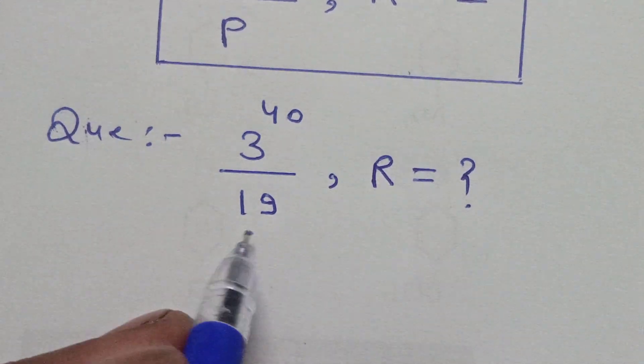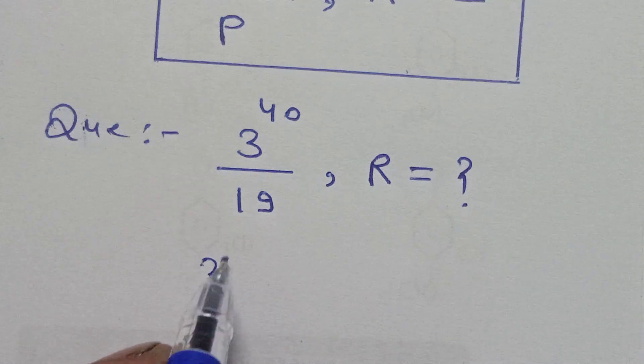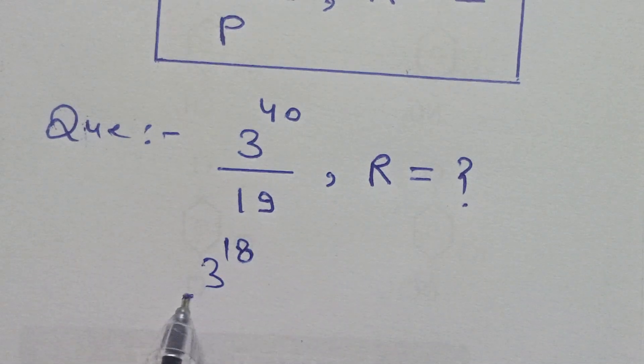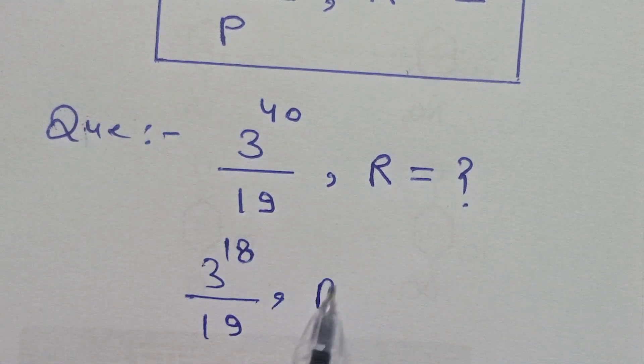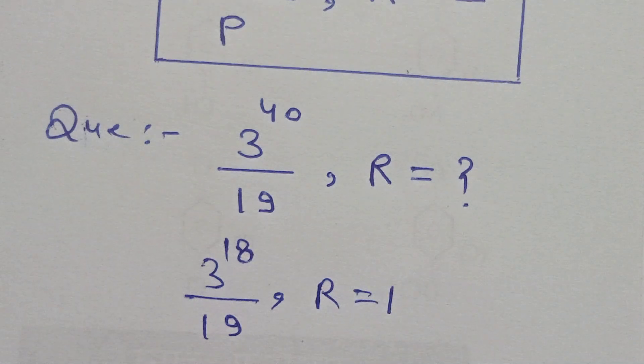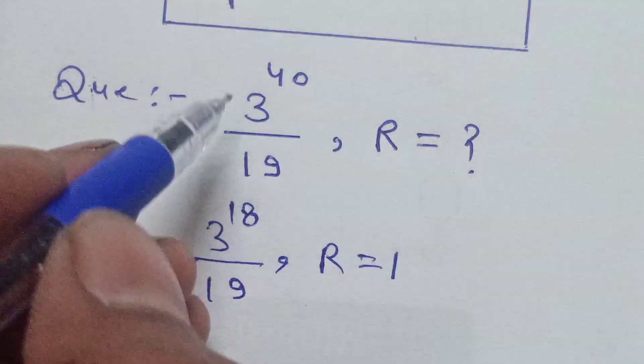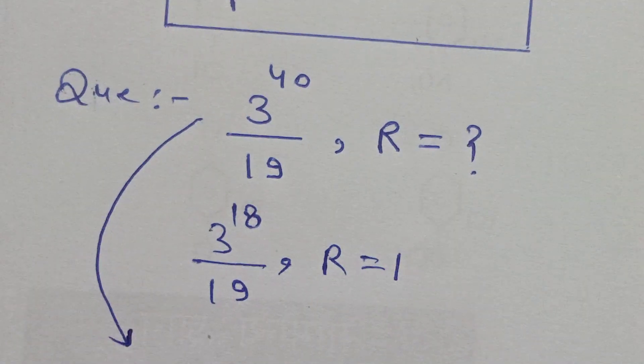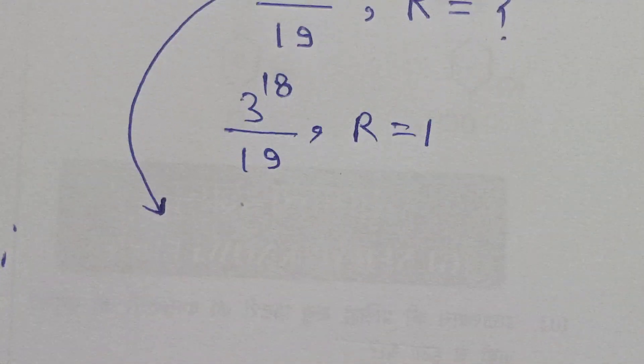Therefore, 3 to the power 18 divided by 19, then remainder will be 1. So we solve this question making this form.